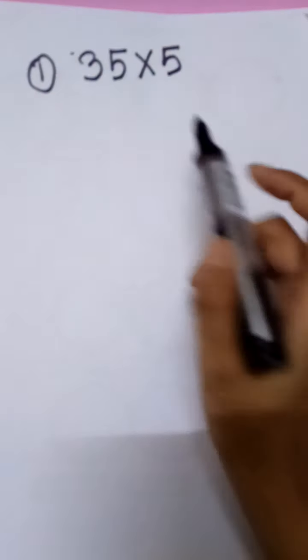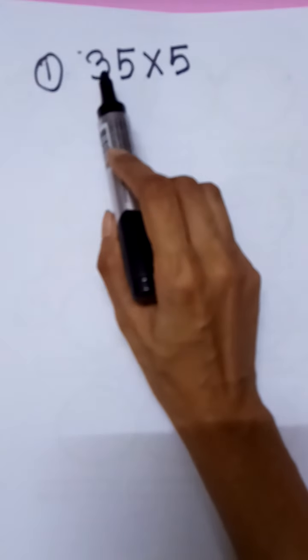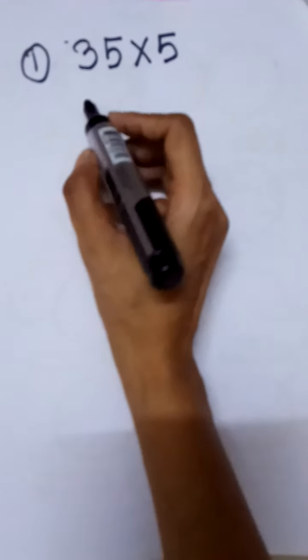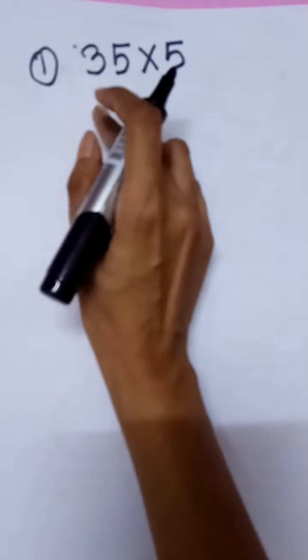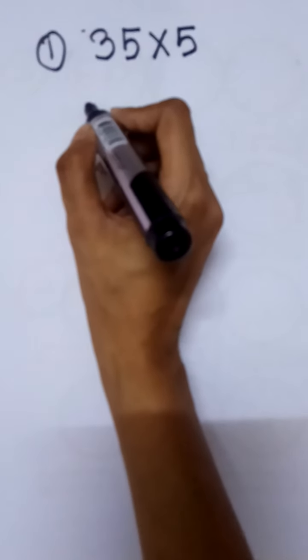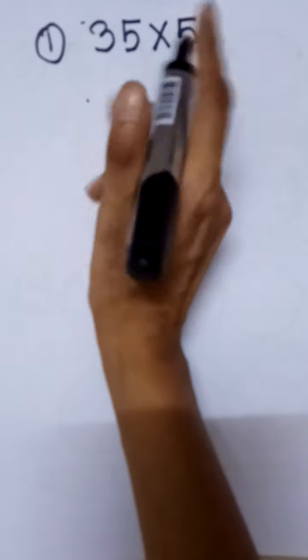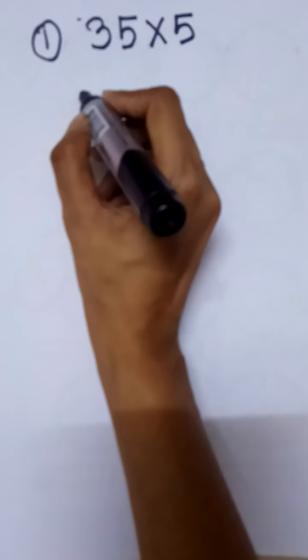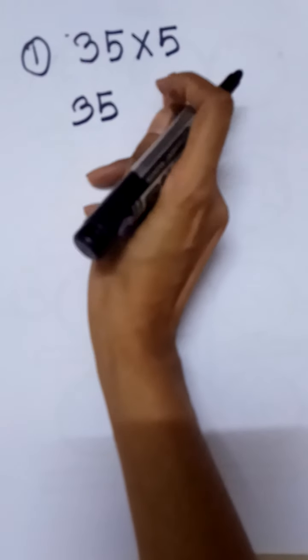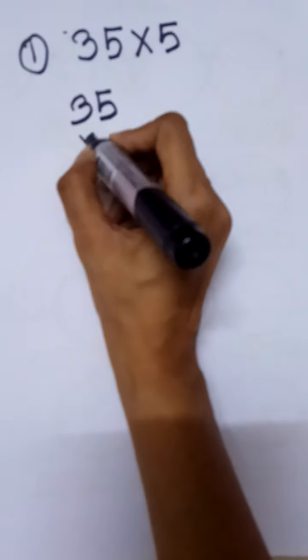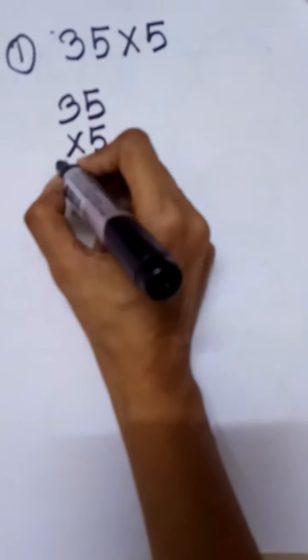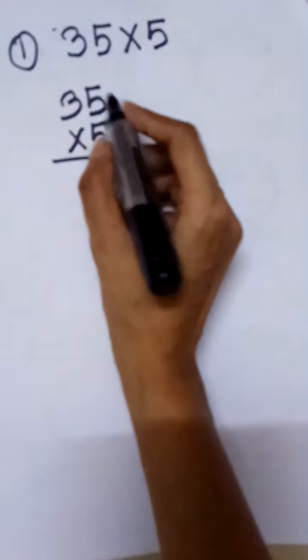We are observing here a multiplication problem, 35 multiplied by 5. On this type of question, we will first write it. First, the big number is 35 here. Write 35, then the small number 5. Write the small number here under 35.